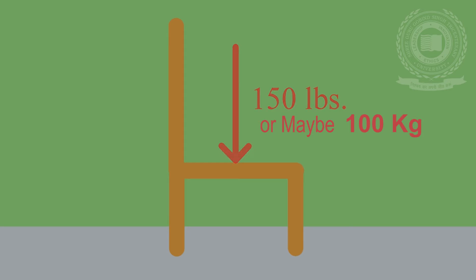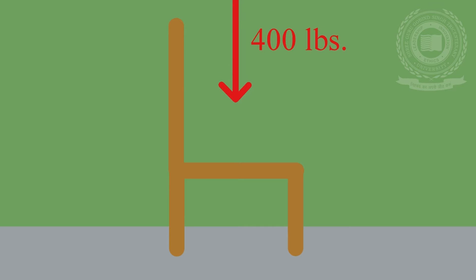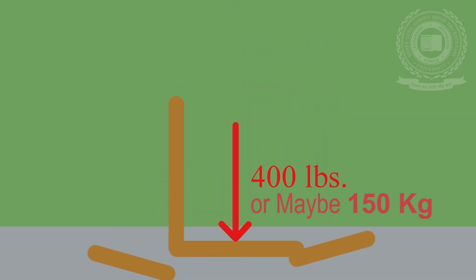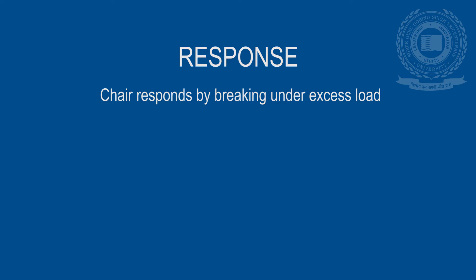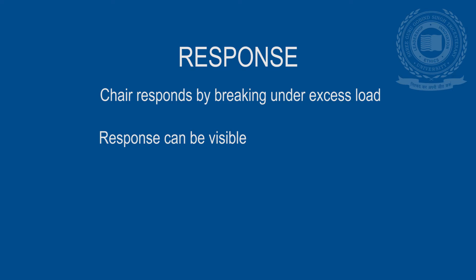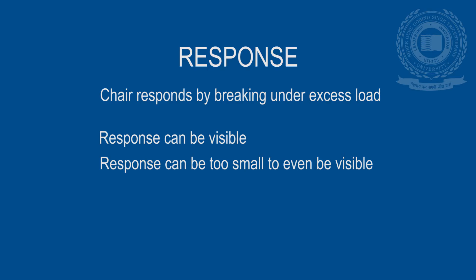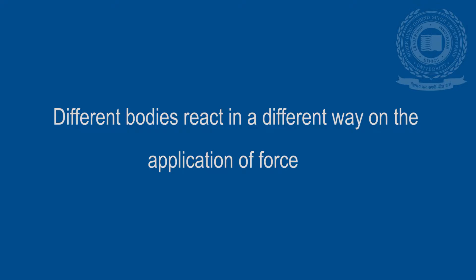I weigh 70 kilograms, so it is safe for me to sit on it. But if a person weighing 150 kilograms sits on the chair, then due to overloading it may break. This is how the chair might respond to different loading conditions. Sometimes the response is visible to our eyes due to its large magnitude, but in some cases it is so small that we cannot detect it with our naked eyes. There are a number of ways in which different types of bodies react under different loading conditions.